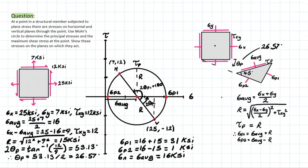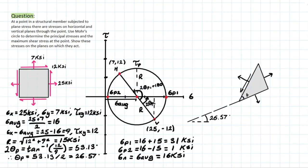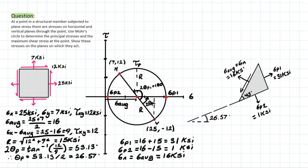Now we can take all of this information and plot it on an element. We draw a triangular element analyzing at 45 degrees for the max in-plane shear, and we incline this element by 26.57 degrees to determine sigma p1 and sigma p2. Sigma p2 equals 1 ksi, sigma p1 equals 31 ksi. The normal force on the plane is sigma average equals sigma n equals 16 ksi, and the in-plane shear stress tau p equals the radius, which is 15 ksi.